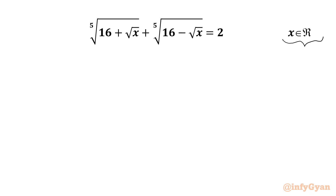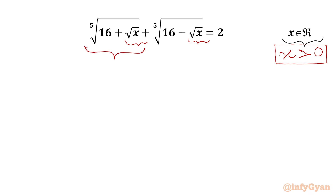Let us get started. Since we have a square root of x, for real x our radicand x must be positive. So our answer must be positive. Now we will use substitutions — let the first 5th root equal a and the second 5th root equal b.